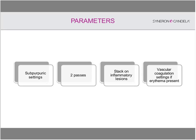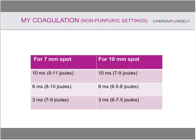I will use my typical vascular coagulation setting if there is background erythema. For the non-purpuric setting, depending on the spot size, fluence changes accordingly. If I see vessels, I use 10 milliseconds. For plain erythema, I use shorter pulse durations of 6 or 3 milliseconds. For inflammatory acne with associated erythema, my first pass is with a 7mm spot at 3 milliseconds using 7 to 7.5 joules per cm², which is still sub-purpuric but generates enough heat for photothermal and photochemical effect. My second pass is 10 milliseconds at 10 joules on a 7mm spot, then I stack on individual spots.